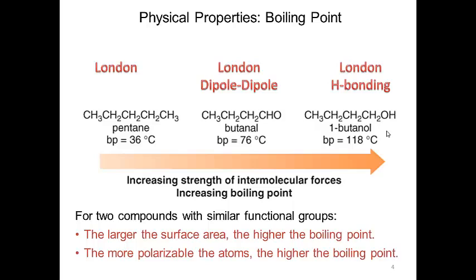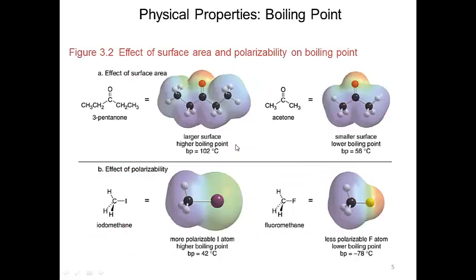For compounds with similar functional groups, if a compound has a larger surface area, the boiling point will be higher. Here, 3-pentanone versus acetone: both have carbonyl groups and dipole-dipole interactions, but 3-pentanone has much greater surface area. As you increase surface area, you also increase contact points for the temporary dipoles seen in London forces — like Velcro: the longer the strip, the more contact points, the stronger the intermolecular force.